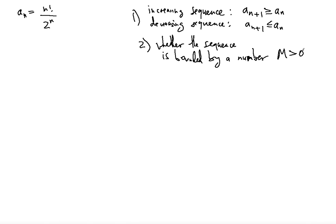This value m must be positive — greater than 0. If we determine that the sequence is increasing, that's just the first step, because an increasing sequence may not necessarily diverge if there is a number m greater than 0 that bounds it.